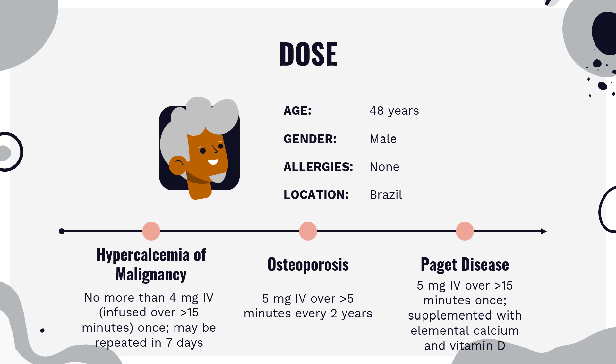Glucocorticoid-induced osteoporosis — treatment and prevention: Reclast, 5 mg, over greater than 15 minutes, every year; supplemented with elemental calcium and vitamin D. Paget's disease: Reclast, 5 mg, over greater than 15 minutes, once; supplemented with elemental calcium and vitamin D.